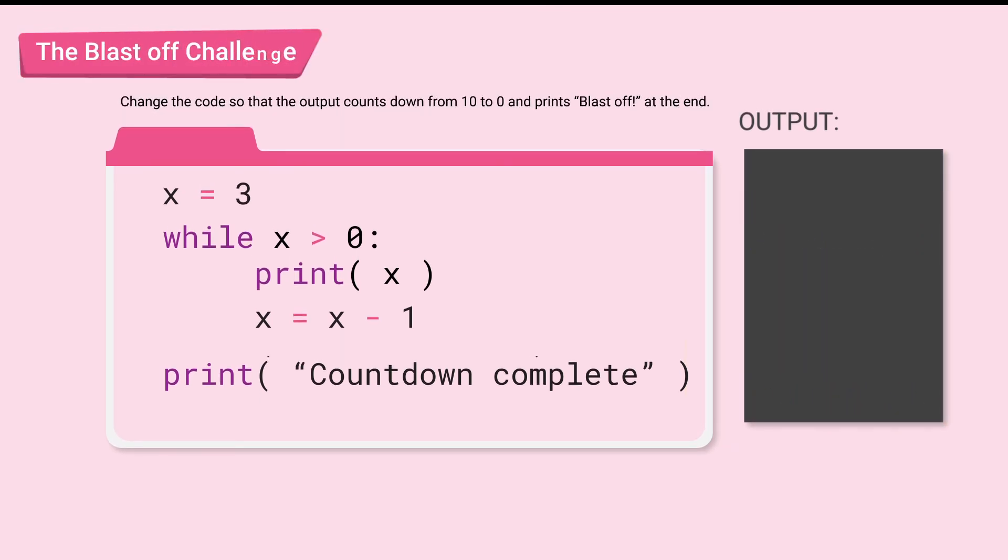Here is a question. If you want to count down from 10 to 0 and print blast off at the end, how would you change the code? Take a minute to figure it out. There are several ways to do this.